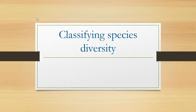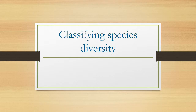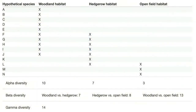Hello everybody, today's class is on classifying species diversity. This is based on the earlier class on alpha, beta, and gamma diversity — check out those videos to know more. Here in this video we are going to classify some species based on the alpha, beta, and gamma diversity we talked about earlier.